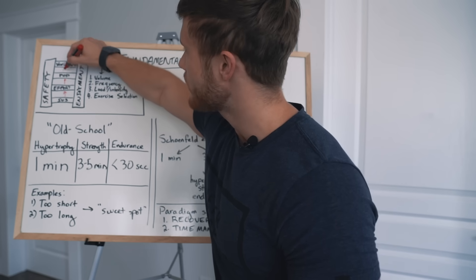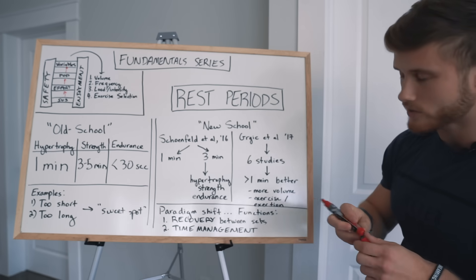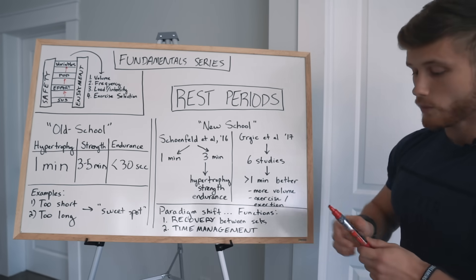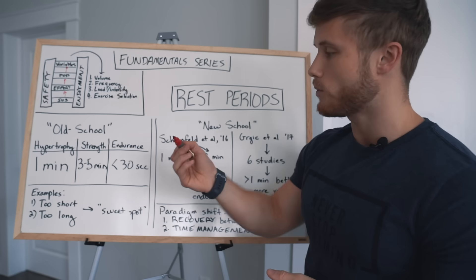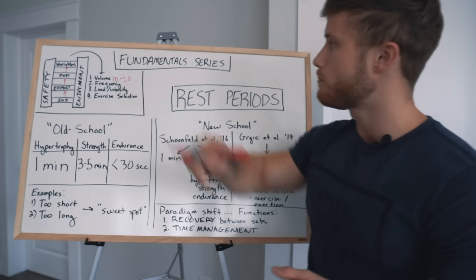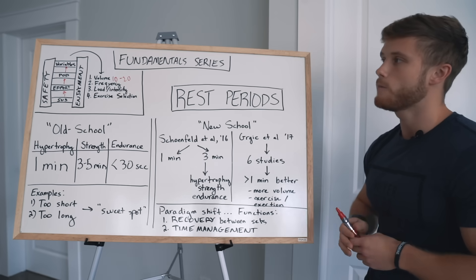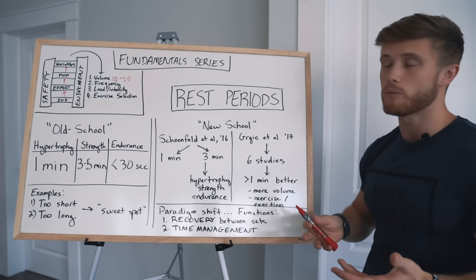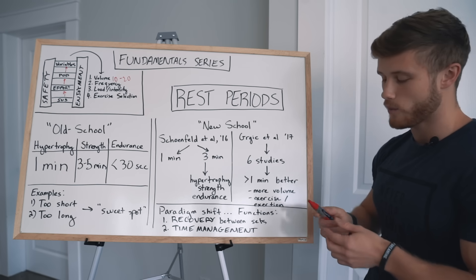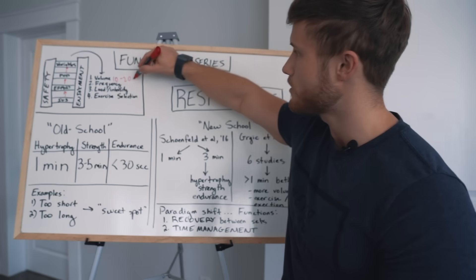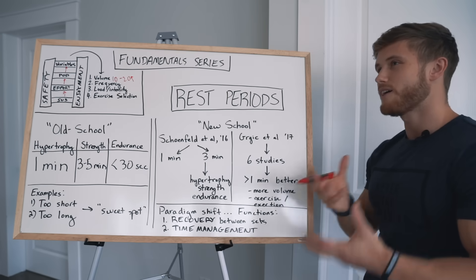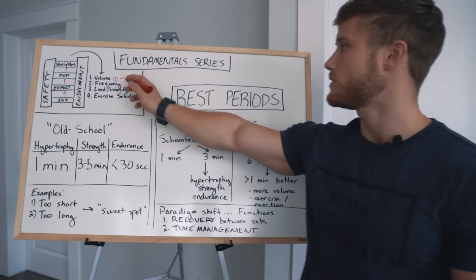And then moving up one rung from there, we've got all the acute training variables. And this is all the stuff like volume, frequency, intensity that everybody talks about. And we've gone through most of these now. So for volume, we said that something like 10 to 20 sets per body part per week is a sweet spot for most people to optimize their progress. And there is some newer literature suggesting that perhaps you can get away with more than 20 sets per week per body part for some body parts. But I still feel like that's a little bit more speculative.